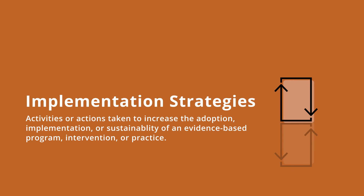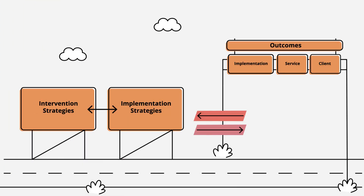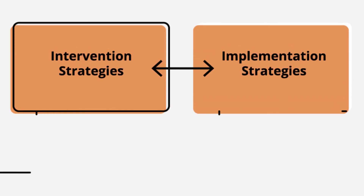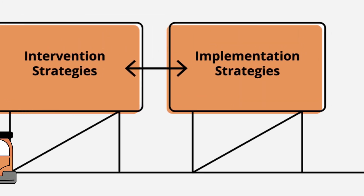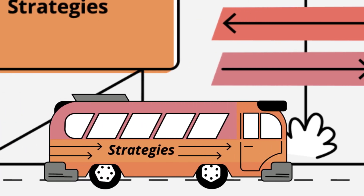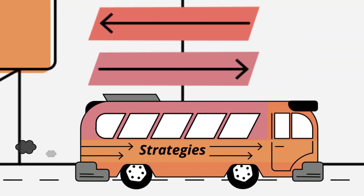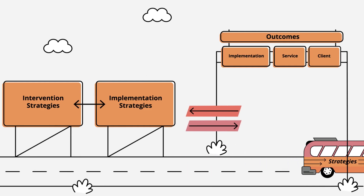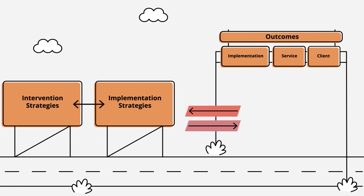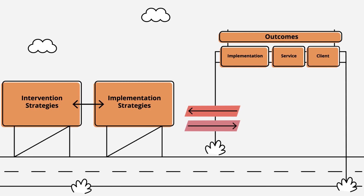What you're looking at is the Proctor model of how implementation science works. Implementation strategies are the how of implementation science and the way that you get your evidence-based practice to the places and people who need it to impact change.